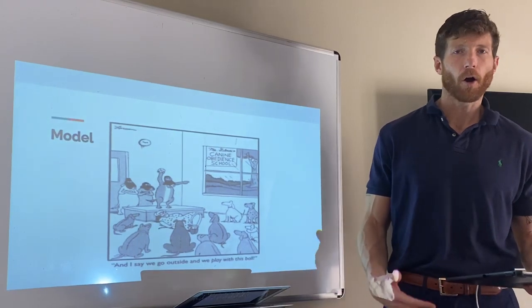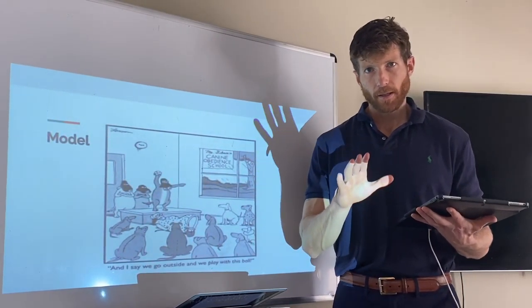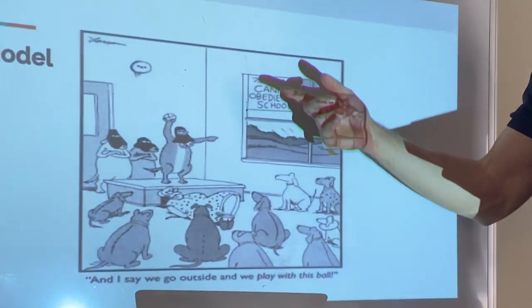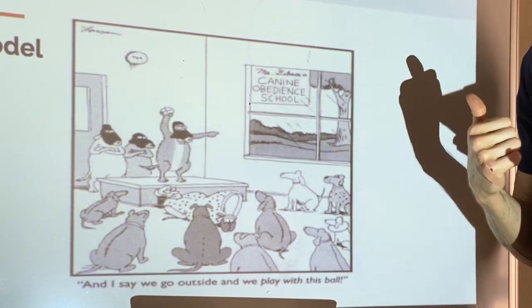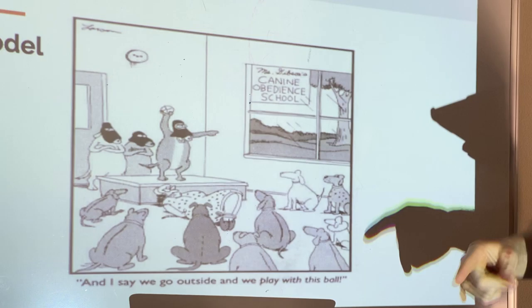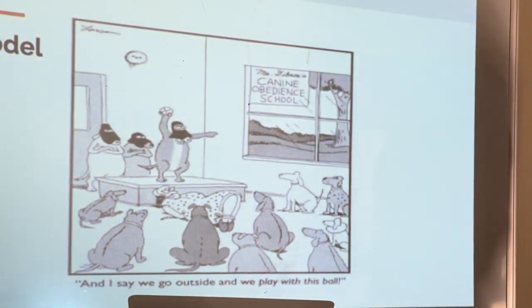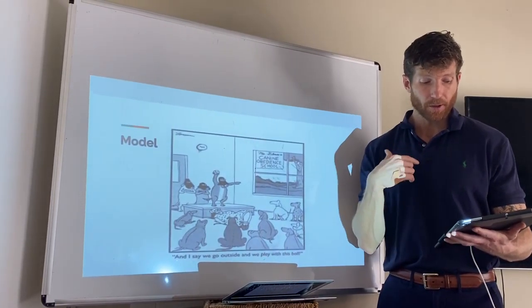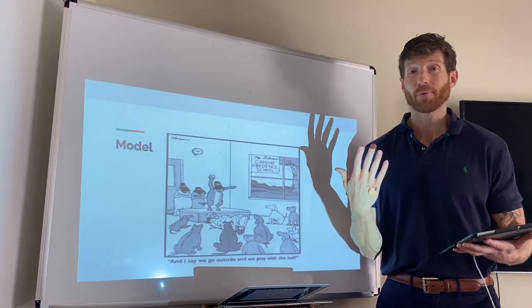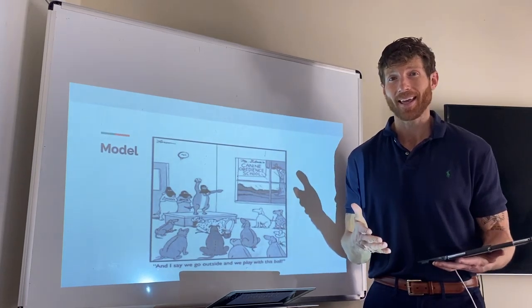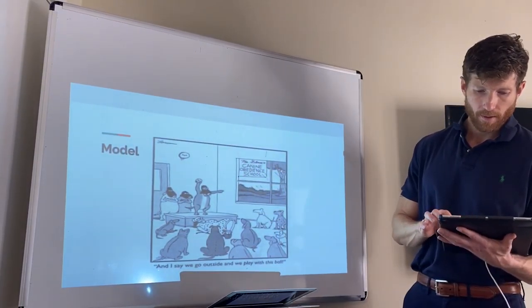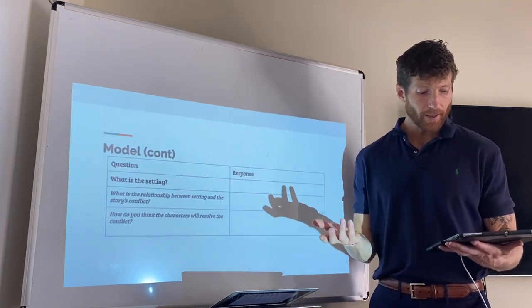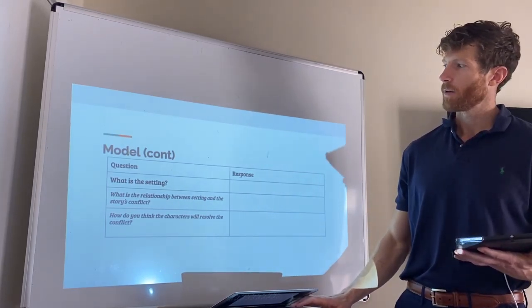For today's model, I want you guys to open up your document. We're going to start by looking at an illustration from a cartoon. Observe the illustration, think about what's going on — think about plot, setting, and characters — then read the caption. Think about the character's problem and the role the setting plays in that problem, and what actions the characters can take to bring themselves to safety. Let's use this graphic organizer for tracking our ideas. I'm going to look at the illustration again — this is my second read.